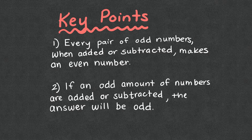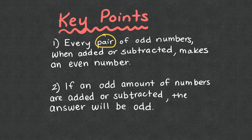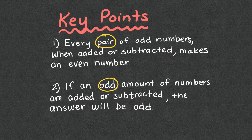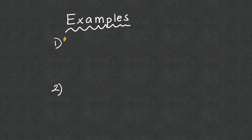Let's get into our key points. Number one: for every pair of odd numbers, when added or subtracted, the result makes an even number. If an odd amount of odd numbers are added or subtracted, the answer will be odd. When we talk about a pair, that means multiples of two. So if we have an even amount of odd numbers, it's going to be an even number. But if we have an odd amount of odd numbers, then the answer will be odd.